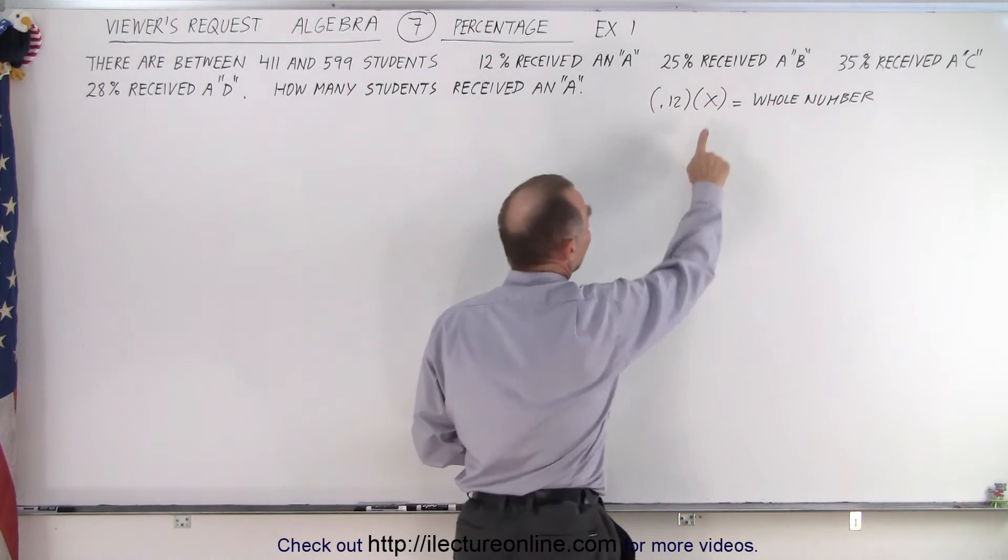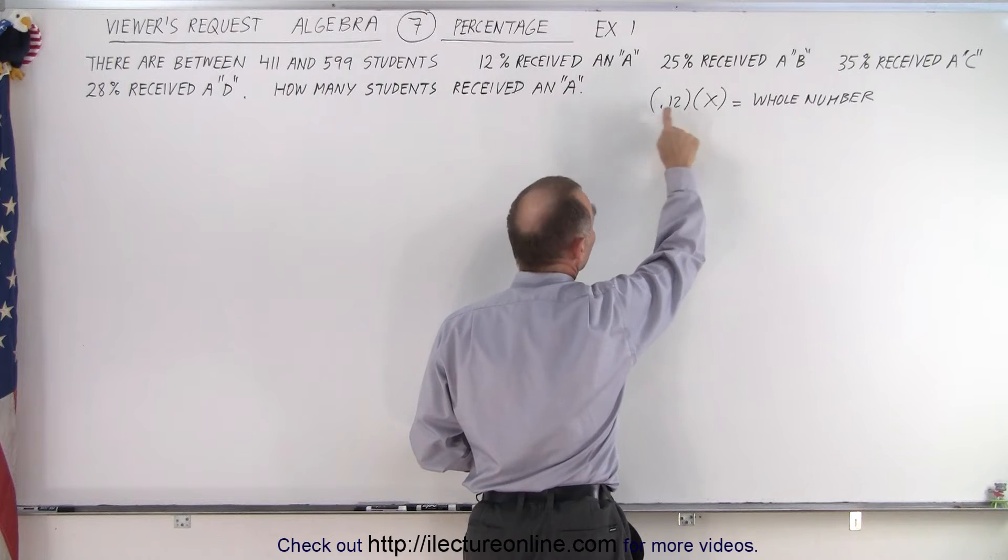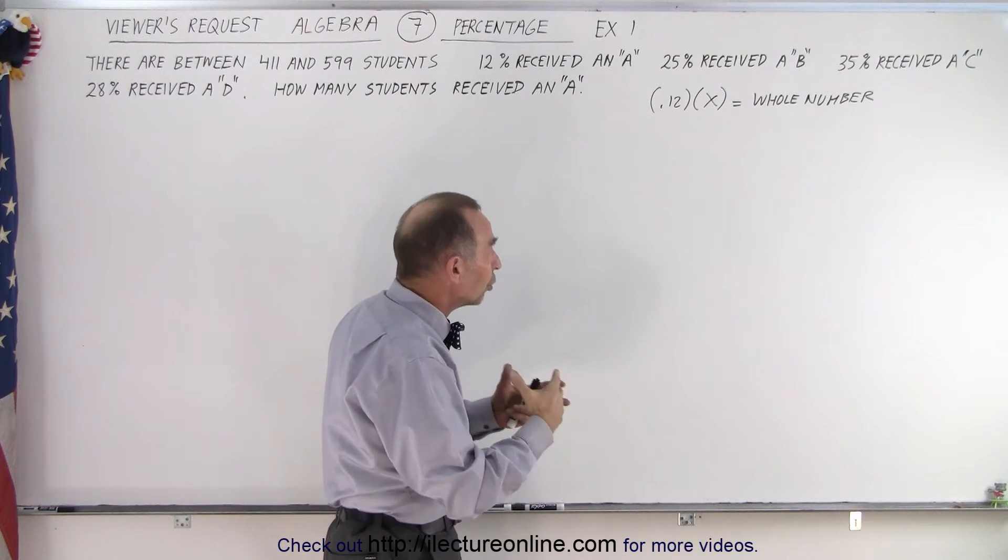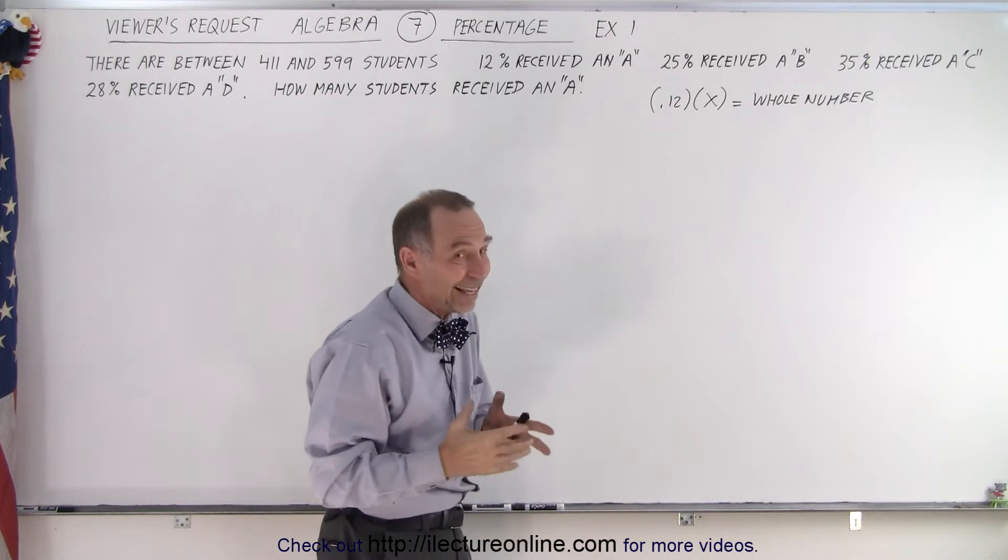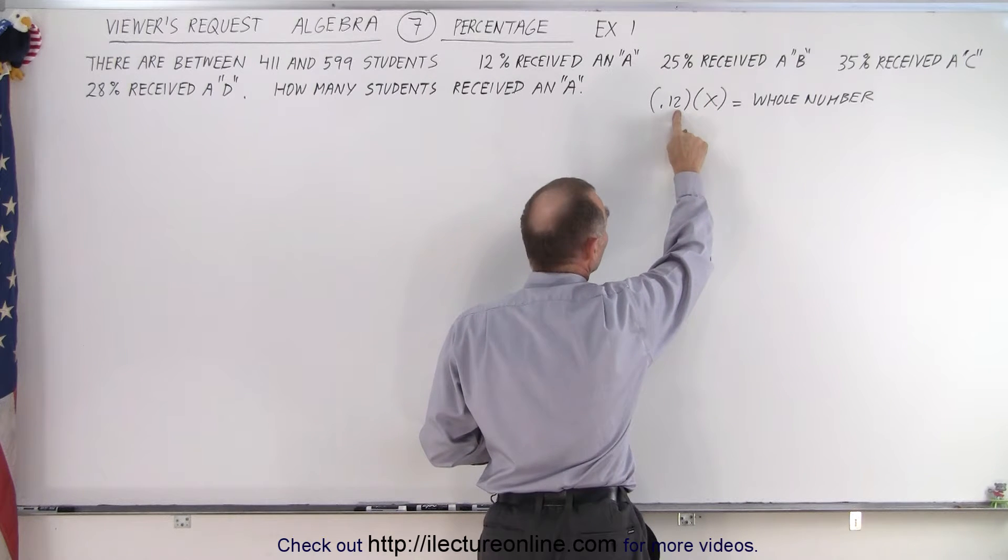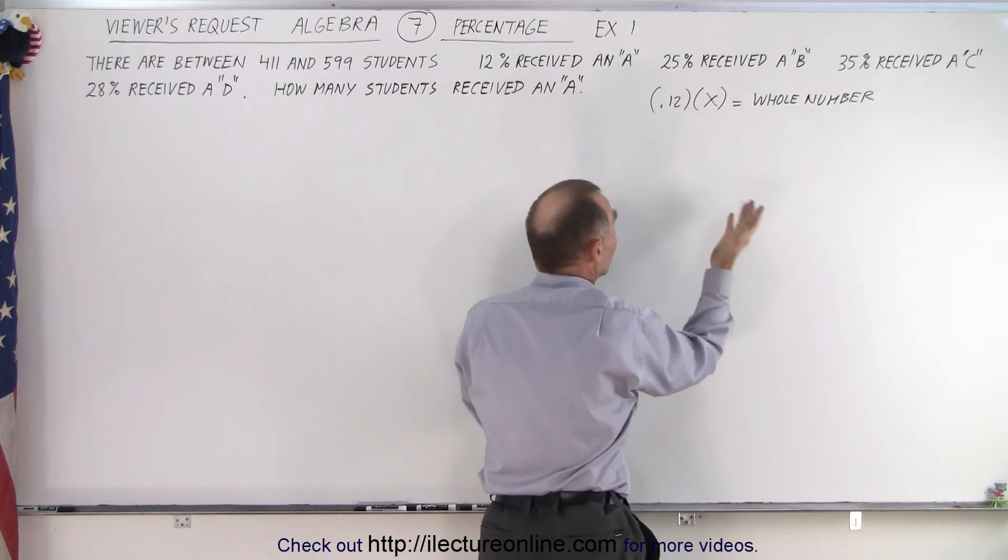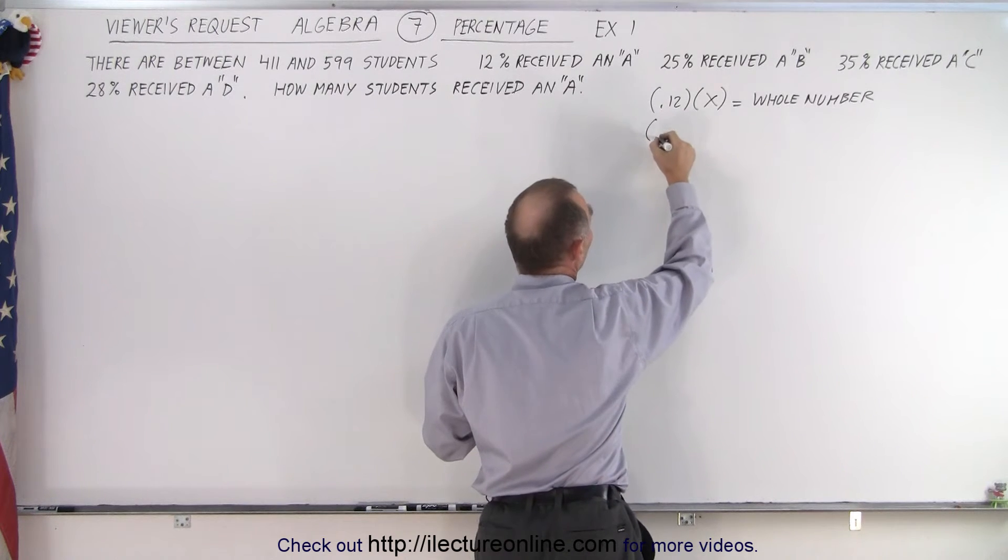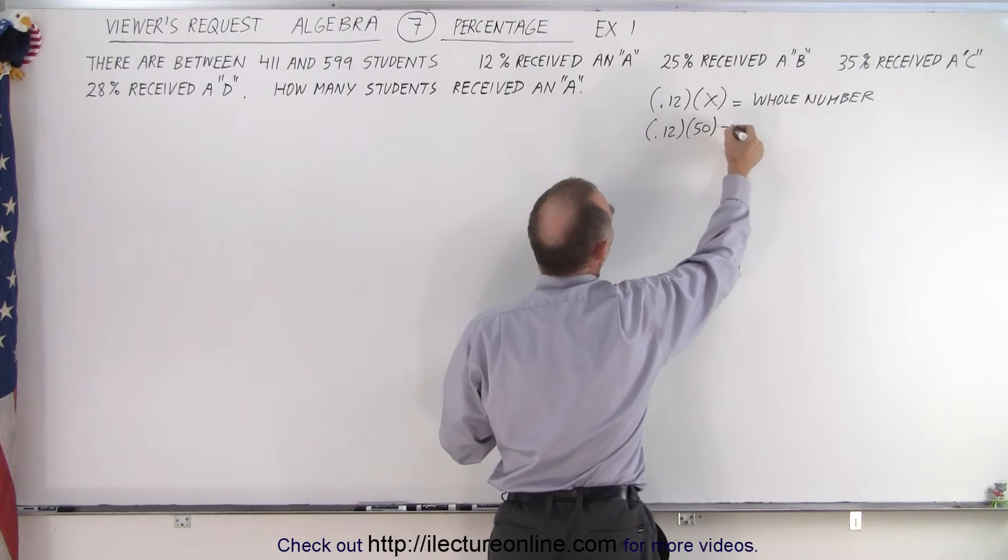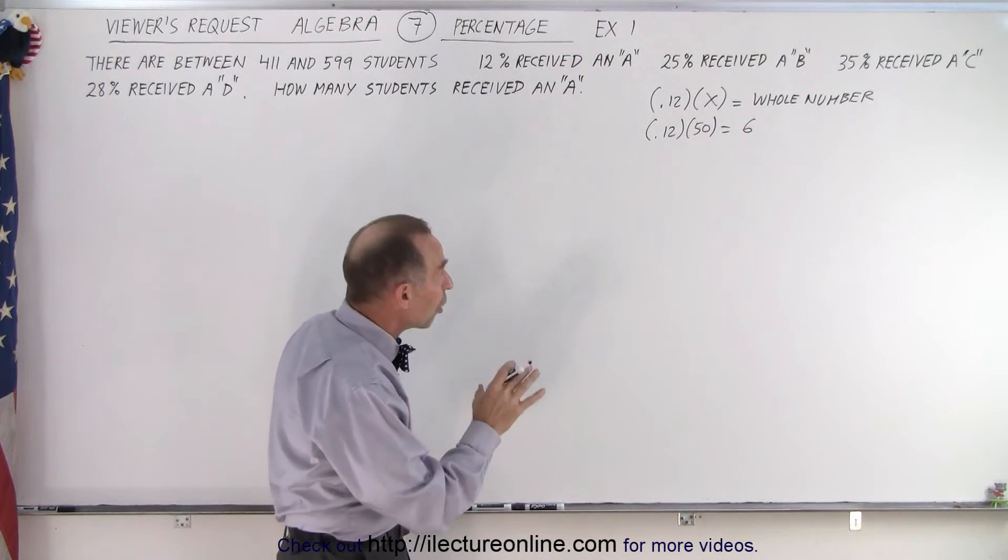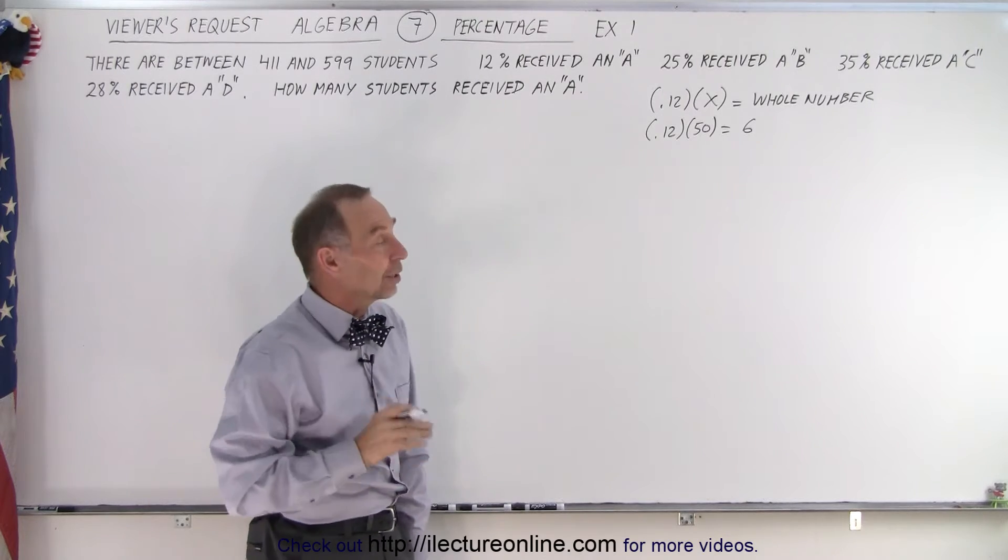Notice that if x was 100, for example, 100 times 0.12 is 12, that's a whole number. But can you have a smaller number than 100? The answer is yes, it could be 50. Because when we multiply this times 50, that's 5 times 10. 5 times 0.02 gives us 0.1. If we take 0.12 and multiply it times 50, we end up with a 6, which is a whole number. And notice that's the smallest x that we can have to get a whole number.